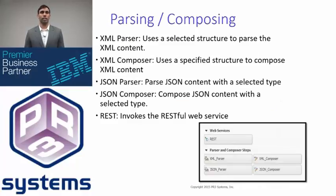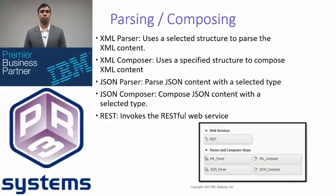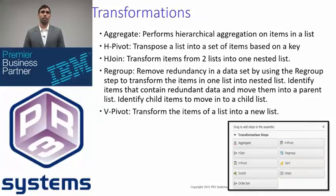So, parsing and composing — there are two different types of files we could work with: XML and JSON. We could parse and compose either of these. We could also invoke RESTful web services. There are a ton of transforms in this stage and this is where it really shines.